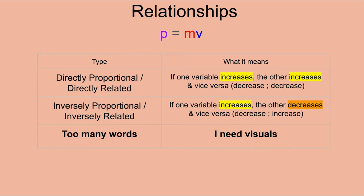The variables m and v are both directly proportional to p — if m increases, p increases; if v increases, p increases. However, if p remains constant, say at a value of 100, with mass 25 and velocity 4, then mass and velocity are inversely proportional to each other: if m goes up, v must go down, and vice versa, in order to keep p constant.